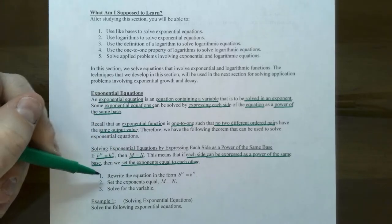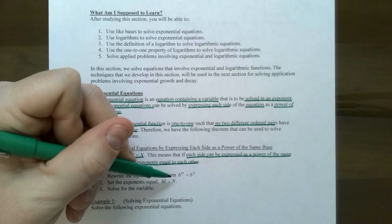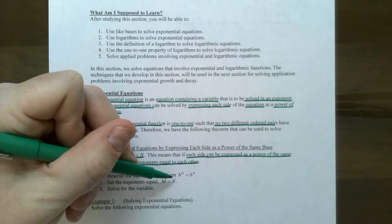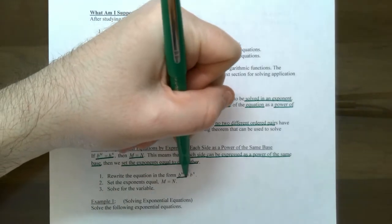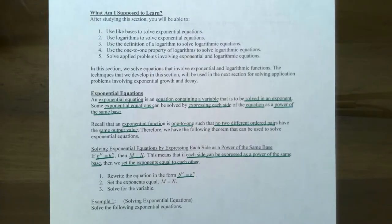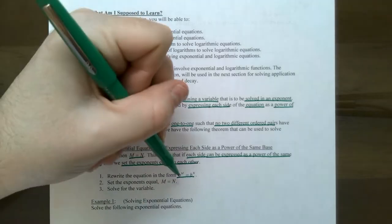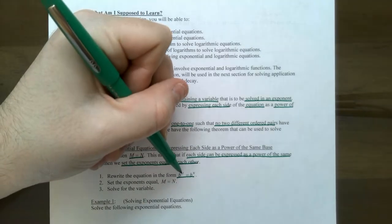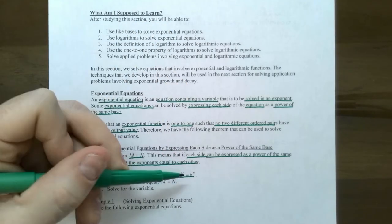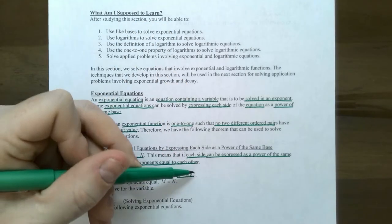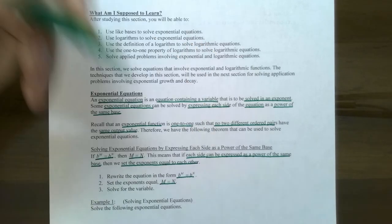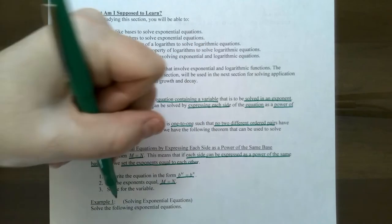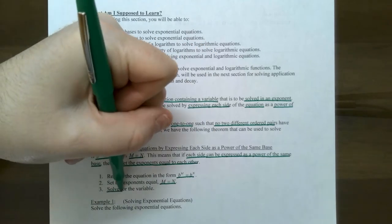Here are the steps: rewrite both sides of the equation to be the same base if that's possible. Once you have base b raised to power m equals base b to some other power, you can set the exponents equal to each other and then solve for the variable.